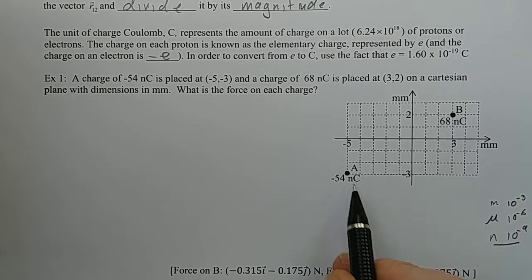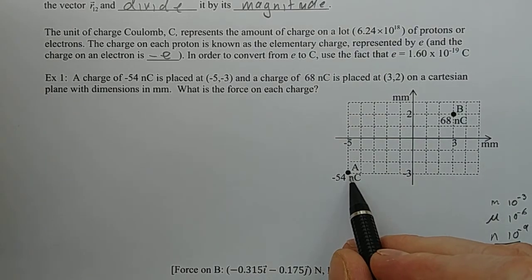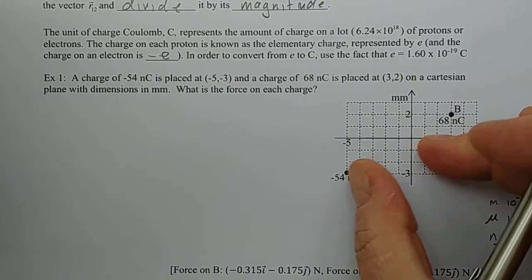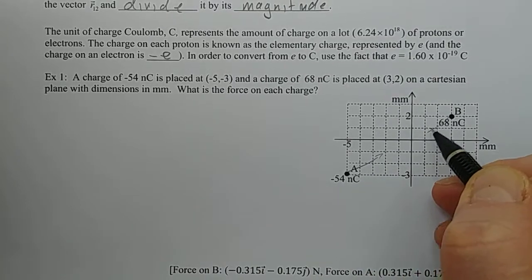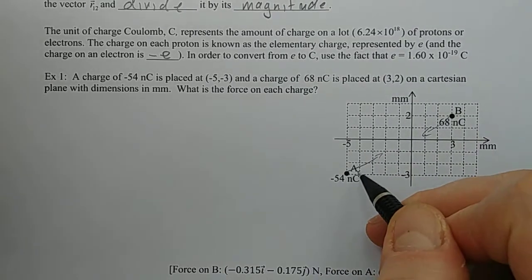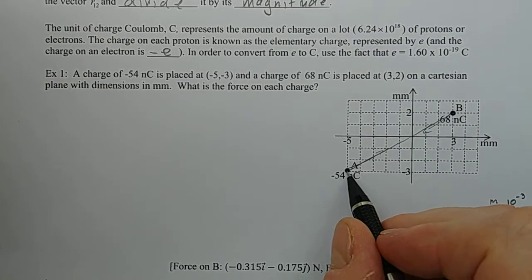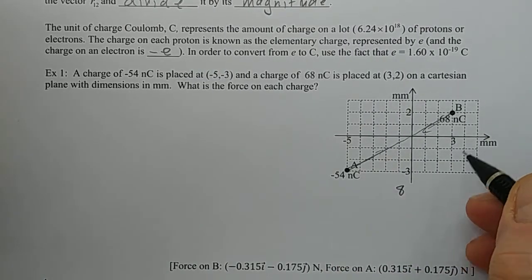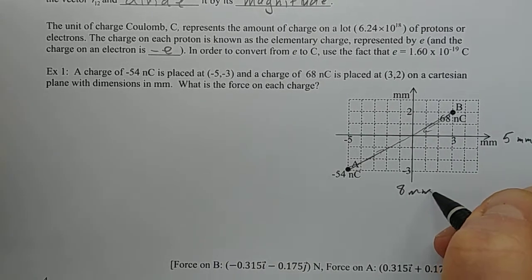So that's what we're looking at here is 10 to the negative 9. That's not very many Coulombs because a Coulomb is actually a fair bit of charge. We have negative 54 nanocoulombs here and 68 nanocoulombs there. They're opposite charges in this case, so they're going to be attracted to each other. This one should have a force pulling it this way and this one should feel a force pulling it this way. And it has to do with this distance between the two. That distance between the two is from negative 5 to 3, that's going to be 8 units this way. And from negative 3 to 2, that's going to be 5 millimeters this way.